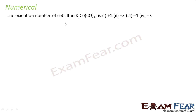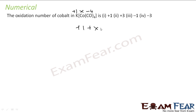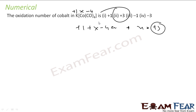Find the total oxidation number of cobalt. CO is minus 1, and with 6 CO it gives minus 6. K is plus 1. So: plus 1 + x + (−6) = 0 — wait, let me redo: plus 1 plus x minus 6 minus 4 = 0, solving gives x = plus 3. So the oxidation state of cobalt is plus 3.